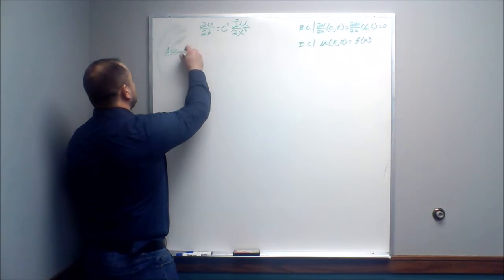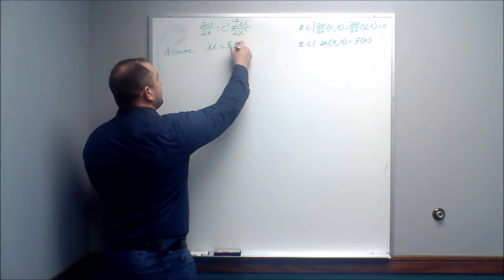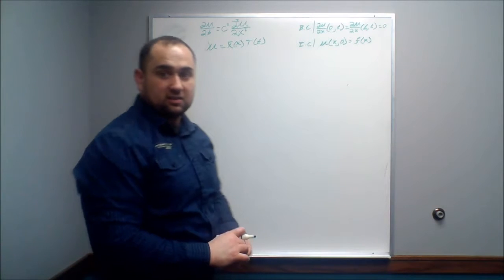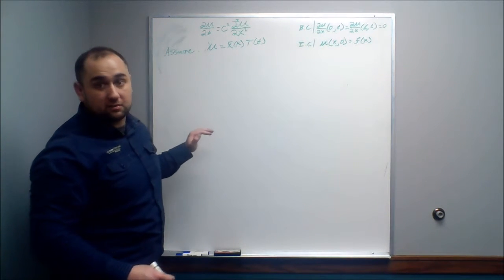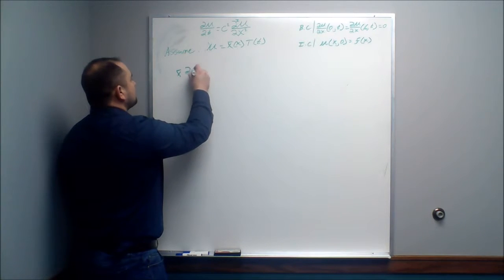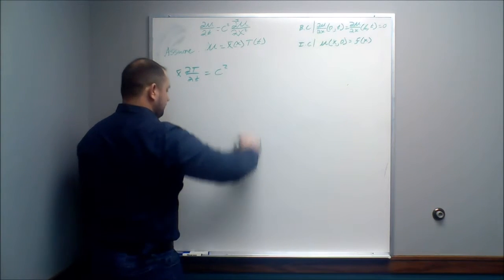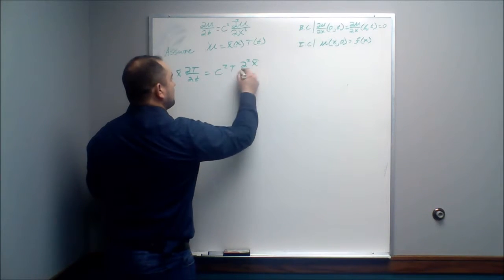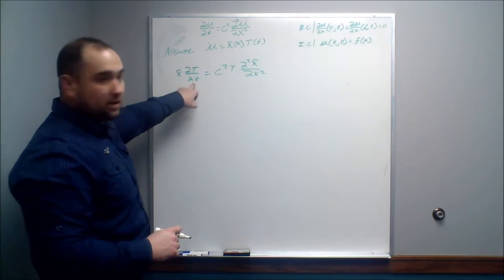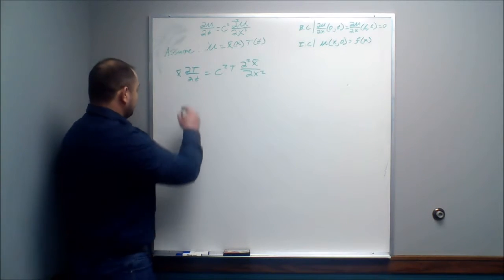We assume that u equals a function of x times a function of t. It's okay to make this assumption because if the assumption is incorrect, the math will tell us in a few steps. Applying this back to the PDE, we get X·(dT/dt) equals c² · T·(d²X/dx²). I can pull out X because it's not a function of t, and pull out T because it's not a function of x. Dividing by X·T gives 1/T · (dT/dt) on one side.